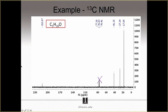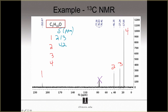Now let's start our interpretation. We're going to label these carbon signals using numbers from left to right. So this signal on the left is one, and we go from left to right labeling them two, three, and four. Let's go ahead and start making a table. Recording the chemical shift of each signal: carbon one is between 210 and 220, probably about 213 ppm. Carbon two looks to be about 42 ppm. Carbon three appears to be 27 ppm. And carbon four, let's say 18 ppm.